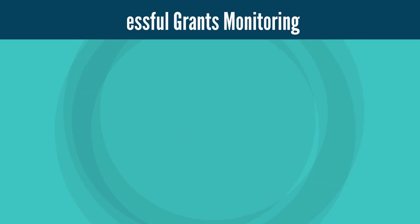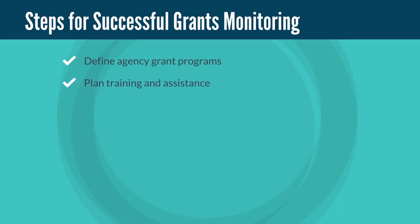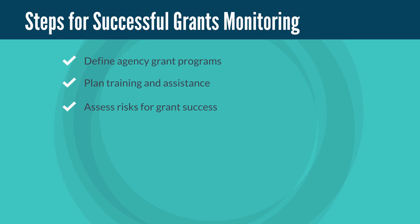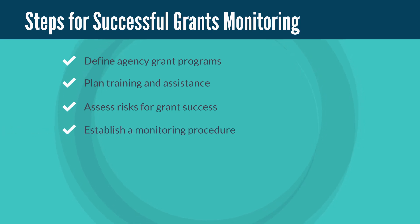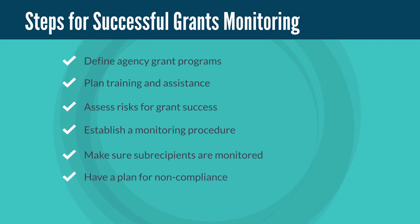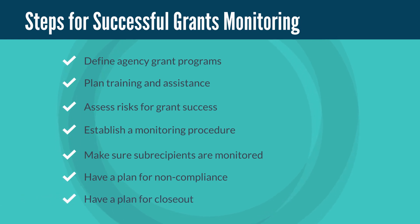Gotcha! I need to: one, define the agency grant programs; two, plan training and assistance to grant recipients so they know what to do; three, have a way to assess risks to the success of the grantee; four, have a procedure to monitor grant recipients; five, if there are sub-recipients, make sure they are monitored too; six, have a plan for how to handle non-compliance; and seven, have a plan for closing out the grant.